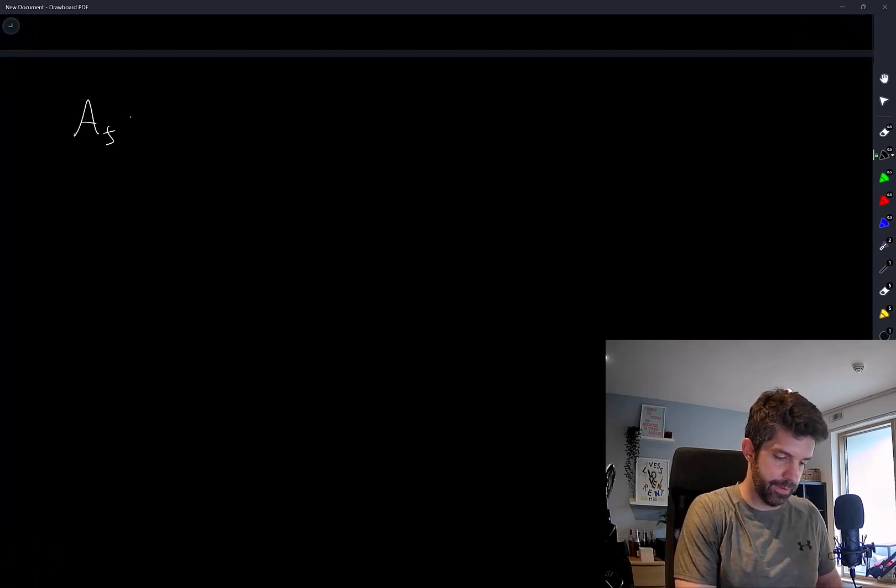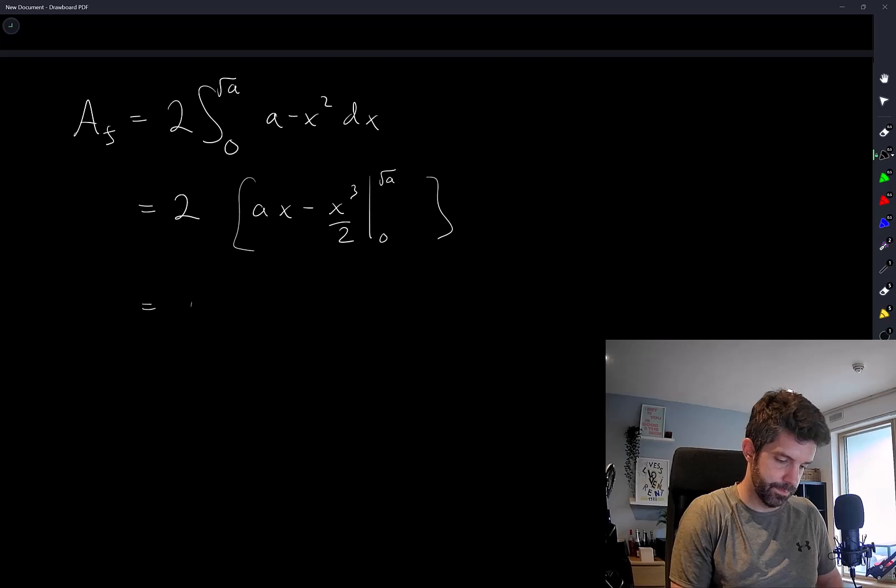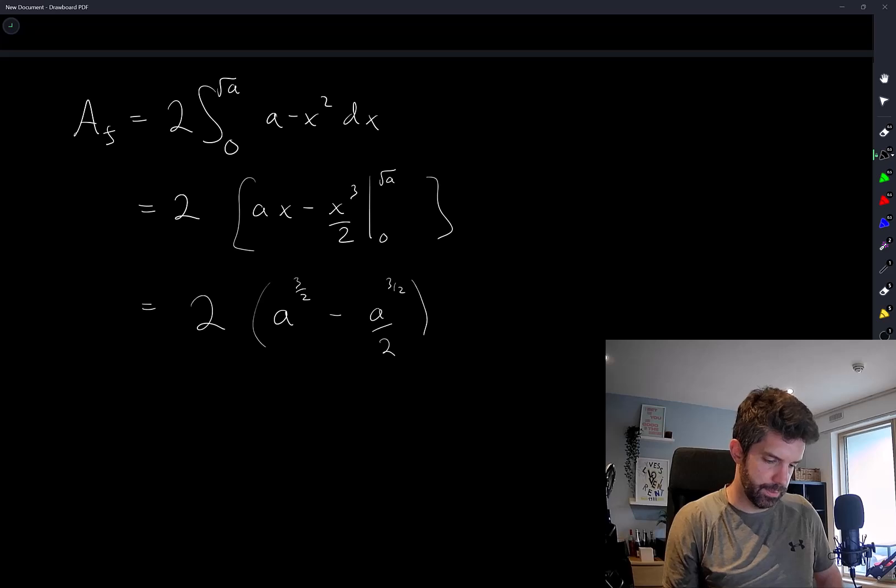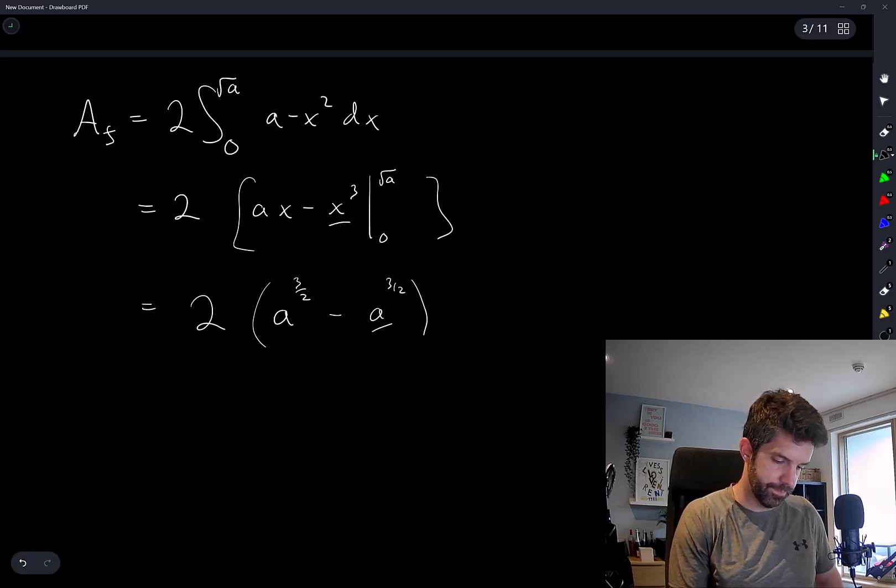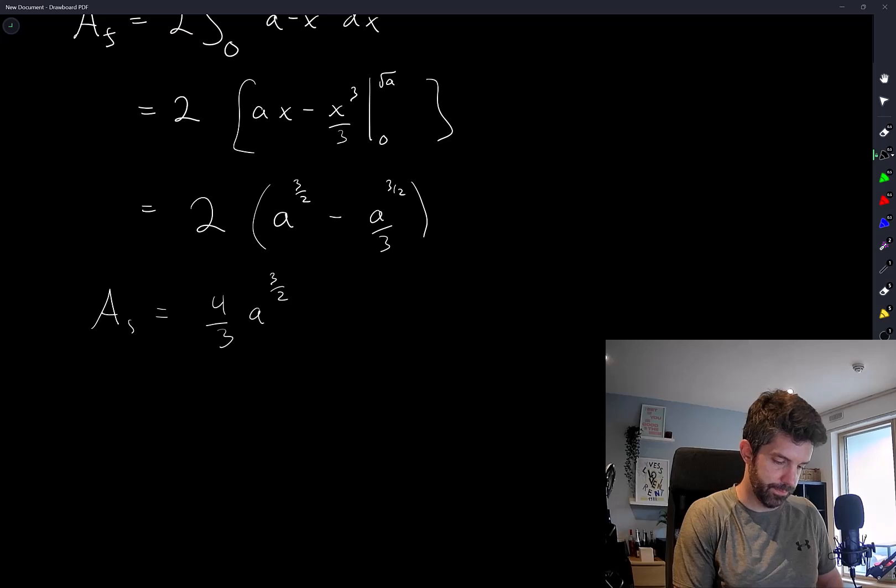Af is 2 integral from 0 to root a of a minus x squared dx. That should be a 3. 4 over 3, a to the 3 over 2, that's Af.